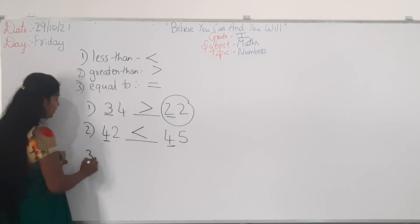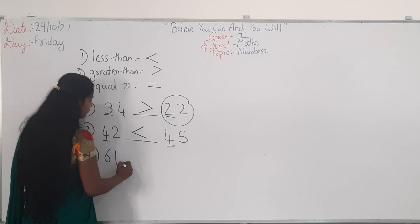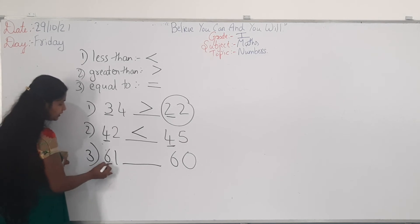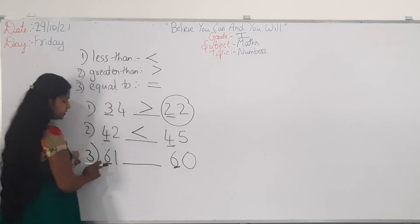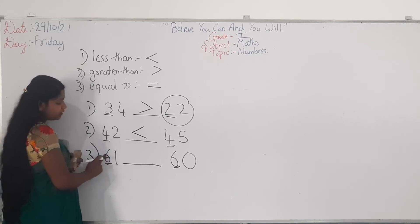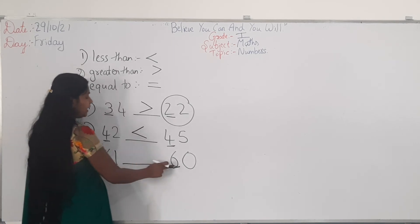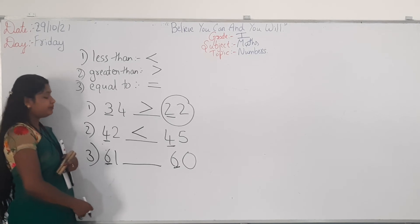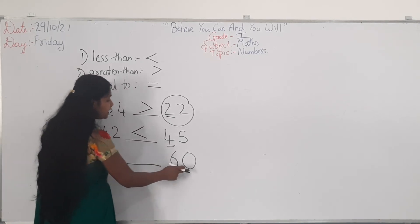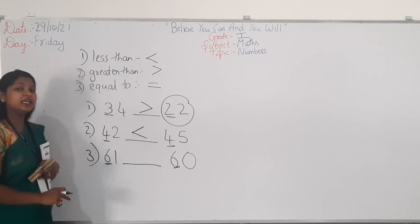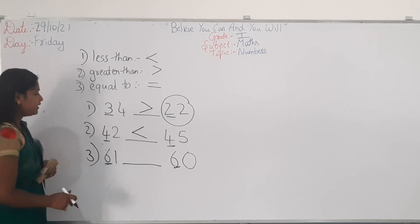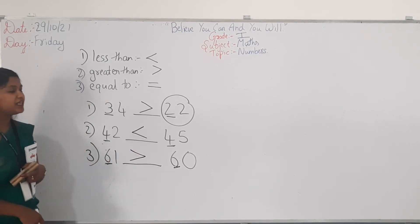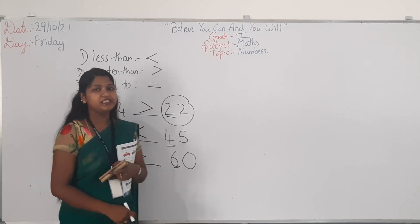Let's solve another problem: 61 blank 60. See the first digit here — it is 6, and here the first digit is also 6. They are the same. Now we have to check the next digit. The next digit here is 1 and here it is 0. Since 1 is greater than 0, so 61 is greater than 60.